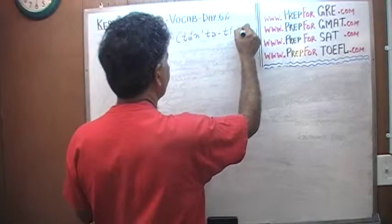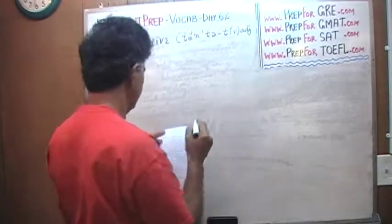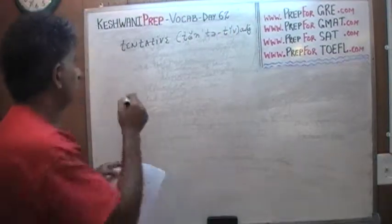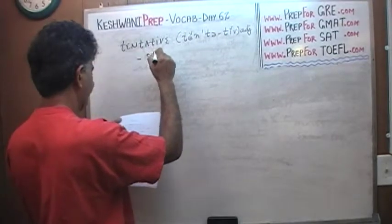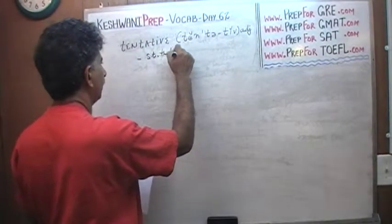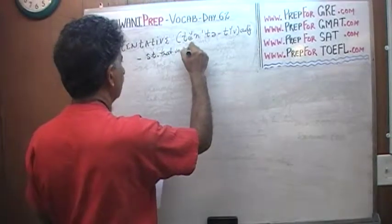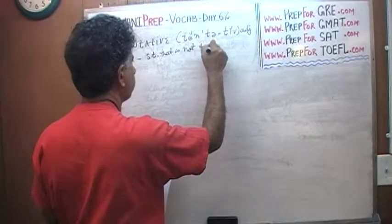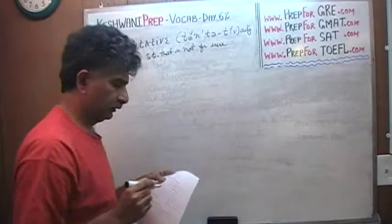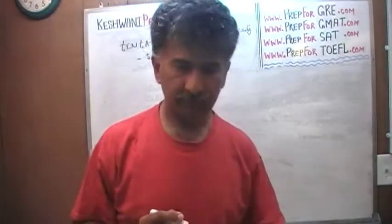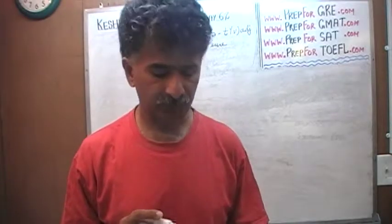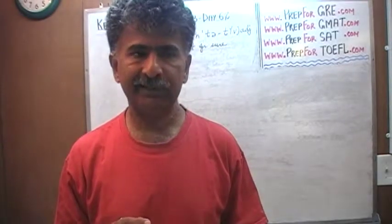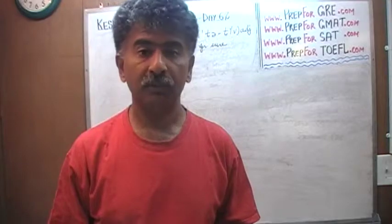Tentative. Tentative. What does it mean? Tentative is something that is not for sure. You must have heard of tentative schedule. Tentative schedule is a schedule that is not yet set in stone, something that is not for sure, something that is liable to change.